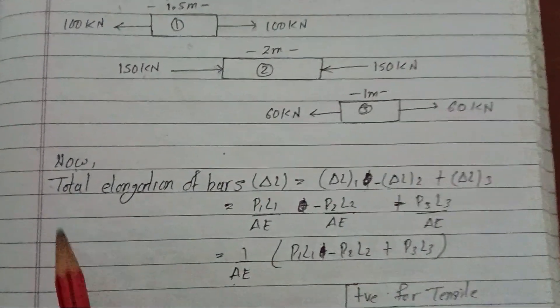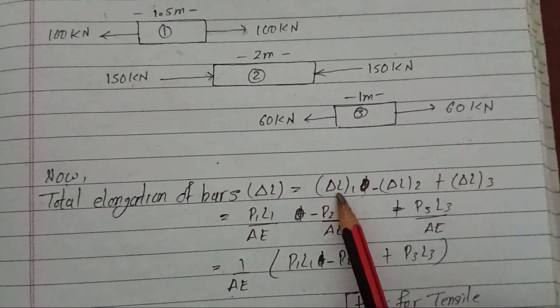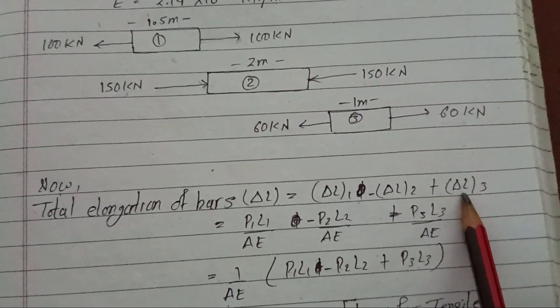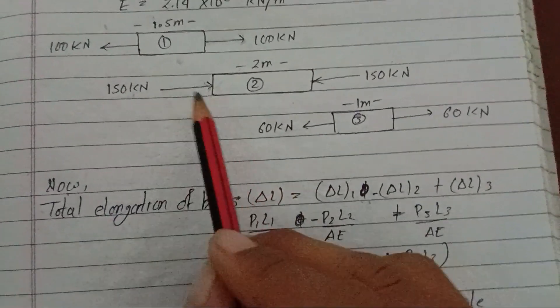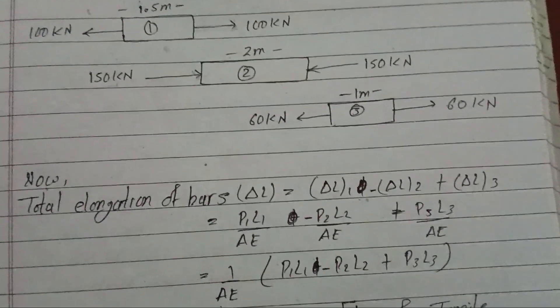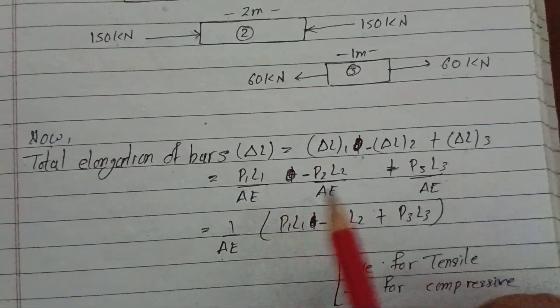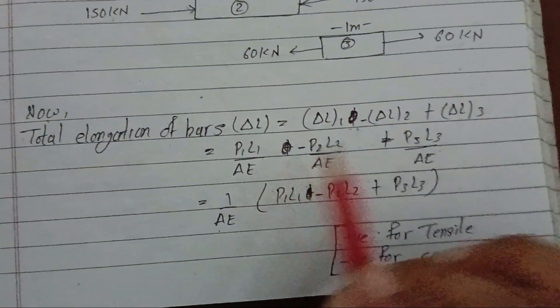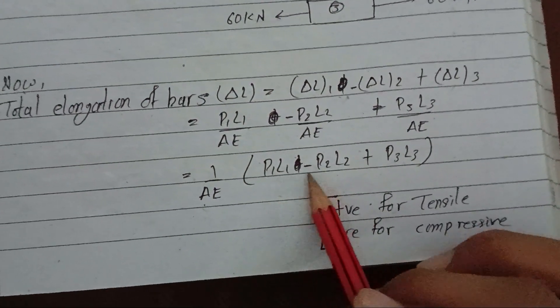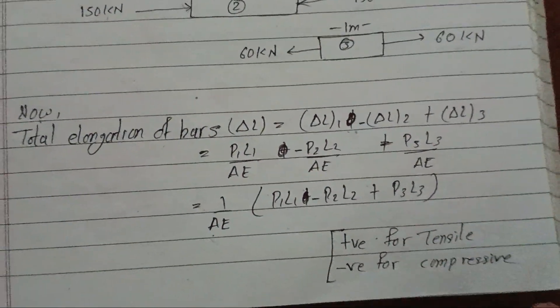Now to find the total elongation, we use the formula: total elongation equals elongation at section 1 plus elongation at section 2 plus elongation at section 3. Since we have compressive forces in some sections, elongation will be negative, giving us compression or shortening. The formula is P L by A E. Since the area is equal for all sections, we can write: 1 by A E times (P1 L1 minus P2 L2 plus P3 L3).